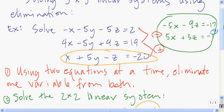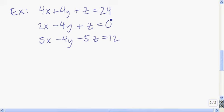As we talked about in class, if you graph a linear function of three variables, it ends up being a plane in three-space. We saw a bunch of those in 3D Geogebra. What's happening here is you've got these three different planes that are coming together in exactly one point.